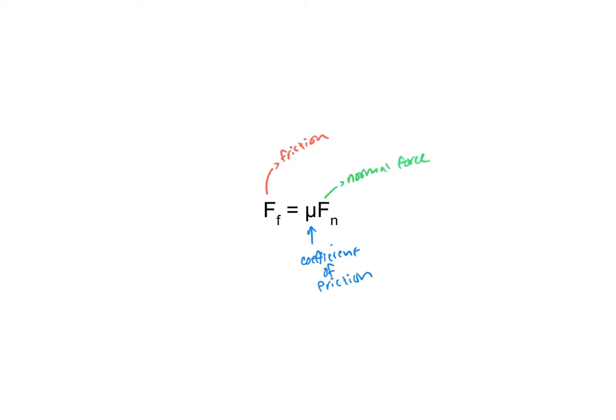Through research we have found that the force of friction is equal to mu, which is our coefficient of friction, multiplied by the normal force. One thing that's really cool about friction is that the coefficient of friction mu is something that's figured out experimentally — we have to actually sit down and do the experiment, rub two things together and see how much friction there is between them.